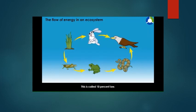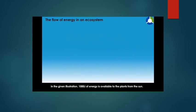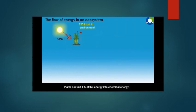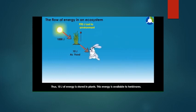This is called the 10 percent law. In the given illustration, 1000 joules of energy is available to the plants from the sun. Plants convert one percent of this energy into chemical energy, thus 10 joules of energy is stored in plants. This energy is available to herbivores.